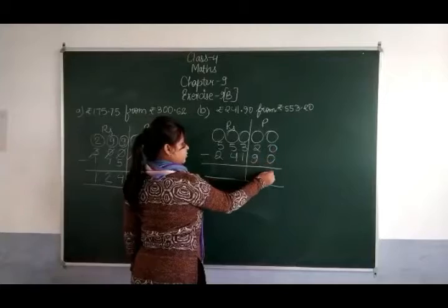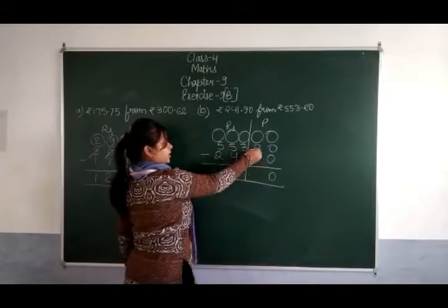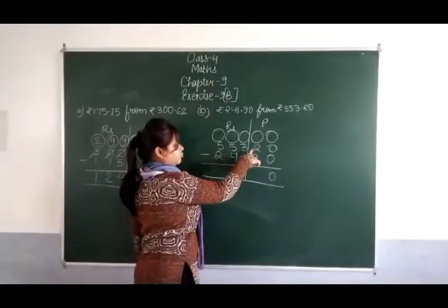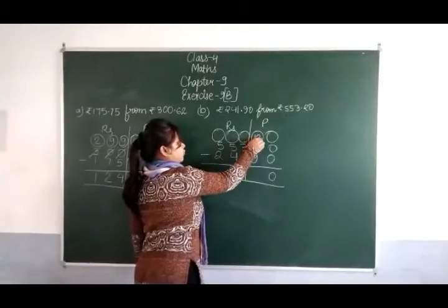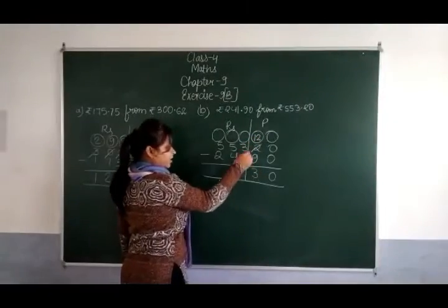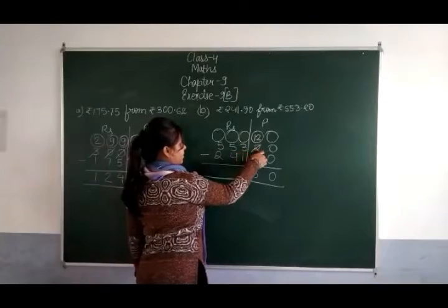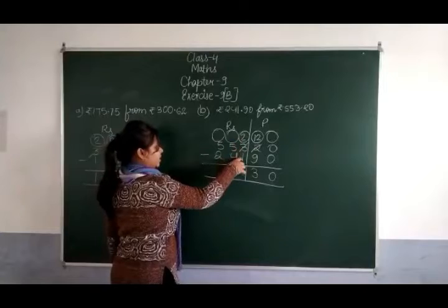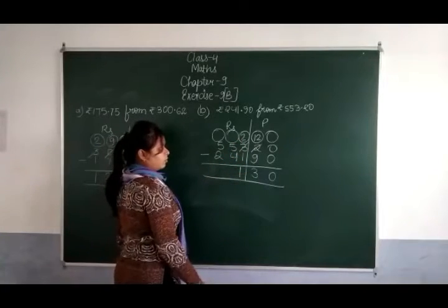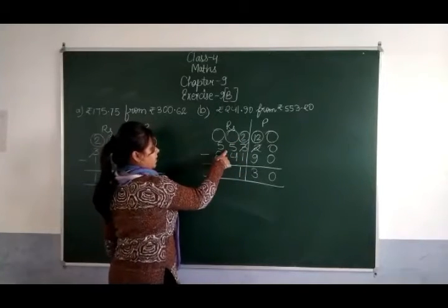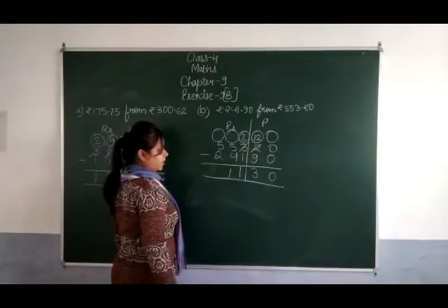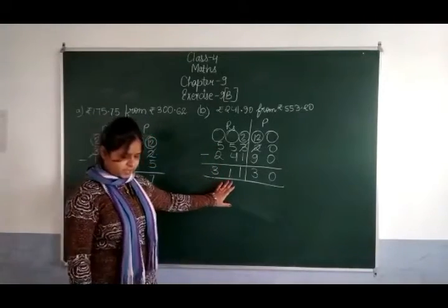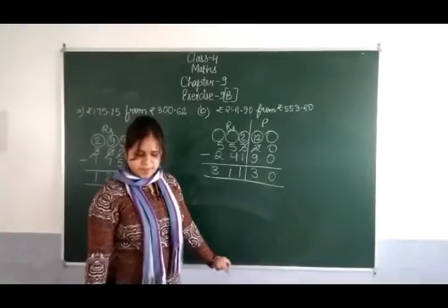0 में से 0 गया तो 0। 2 में से 9 नहीं जाएंगे, तो 1 carry करेंगे — 12 हो जाएगा, 3 बचेगा। इसने 1 दिया, यहाँ 2 हुआ। 2 में से 1 गए तो 1 remaining। 5 में से 4 गए तो 1। 5 में से 2 गए तो 3। 311 रूपीज और 30 पैसे।